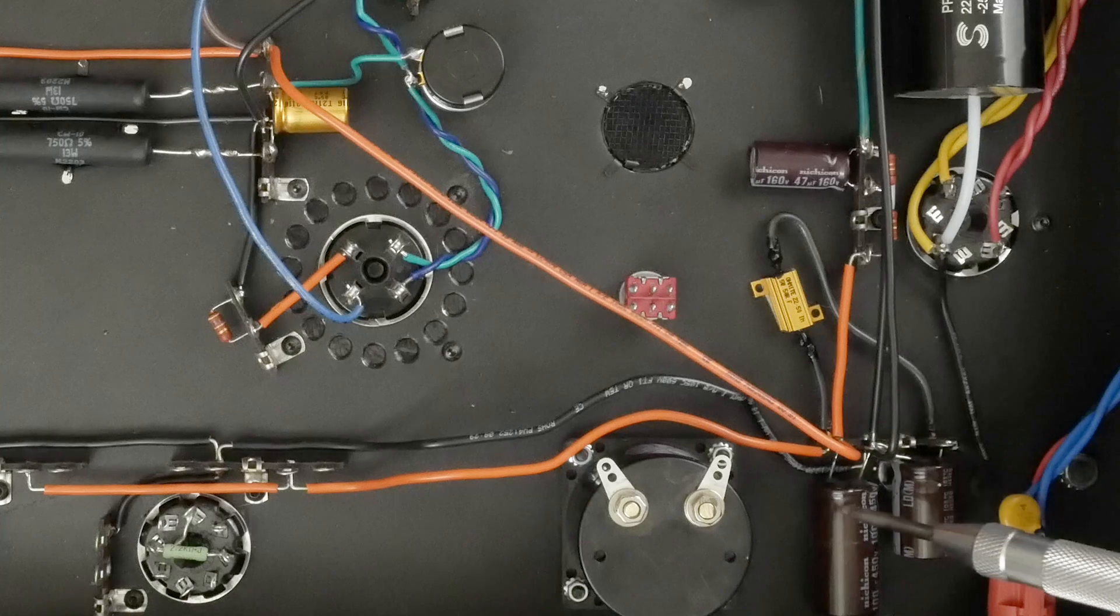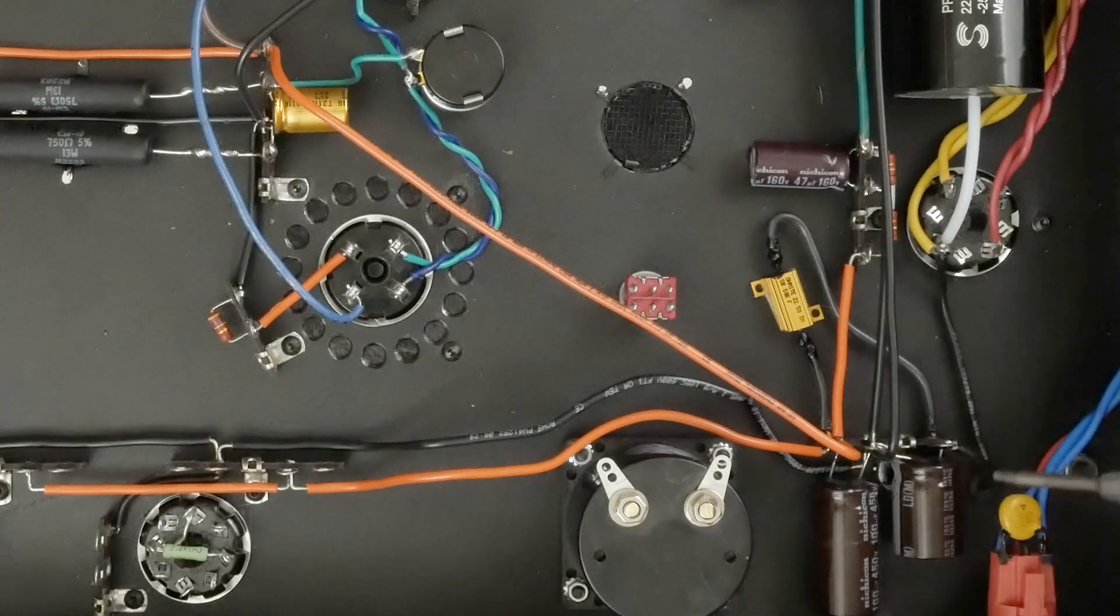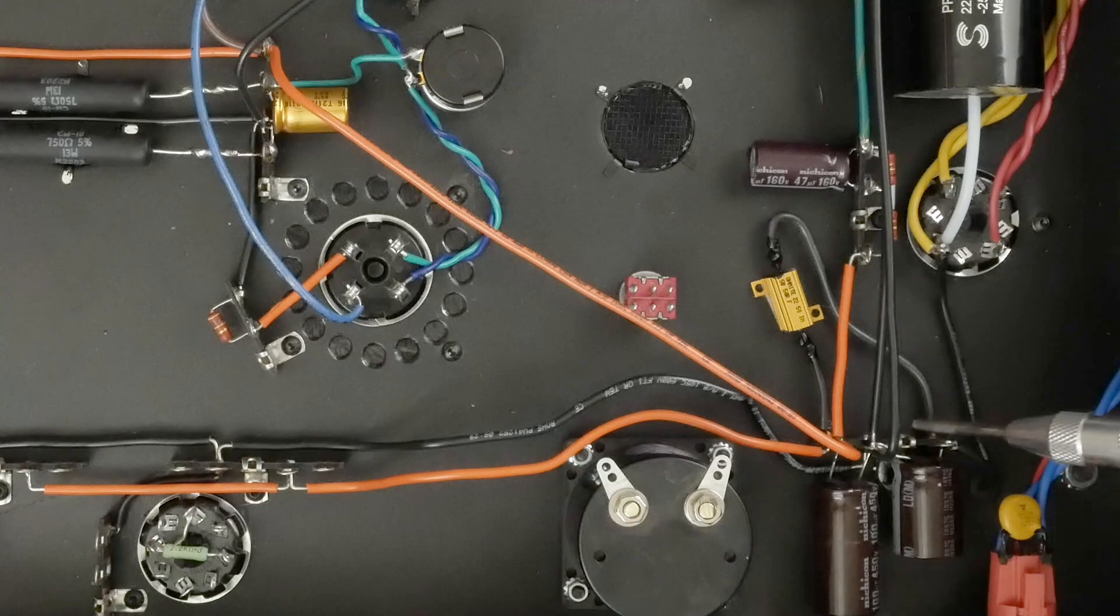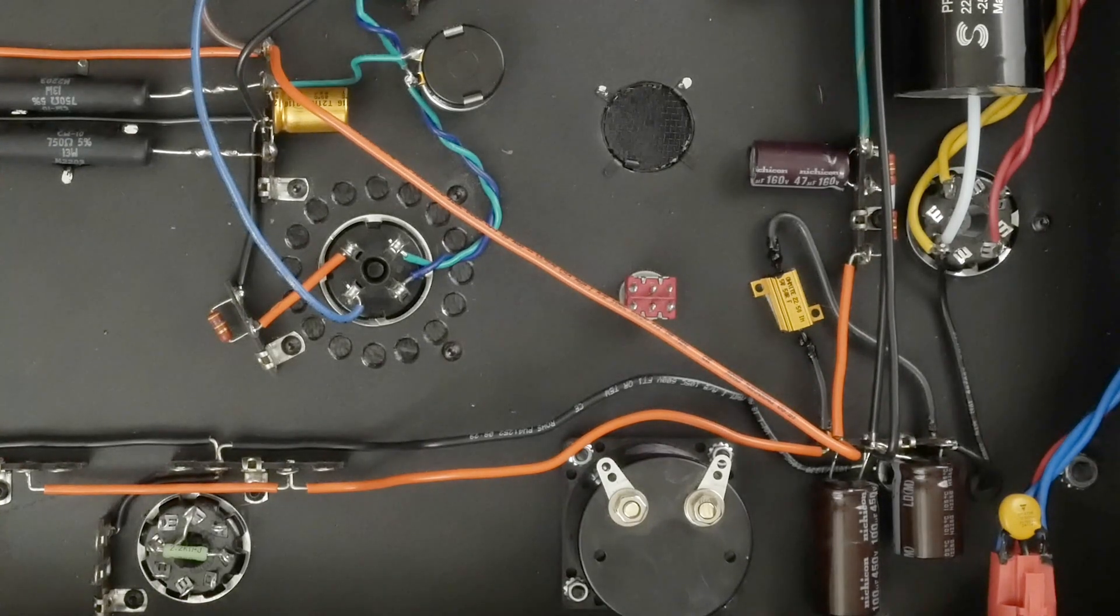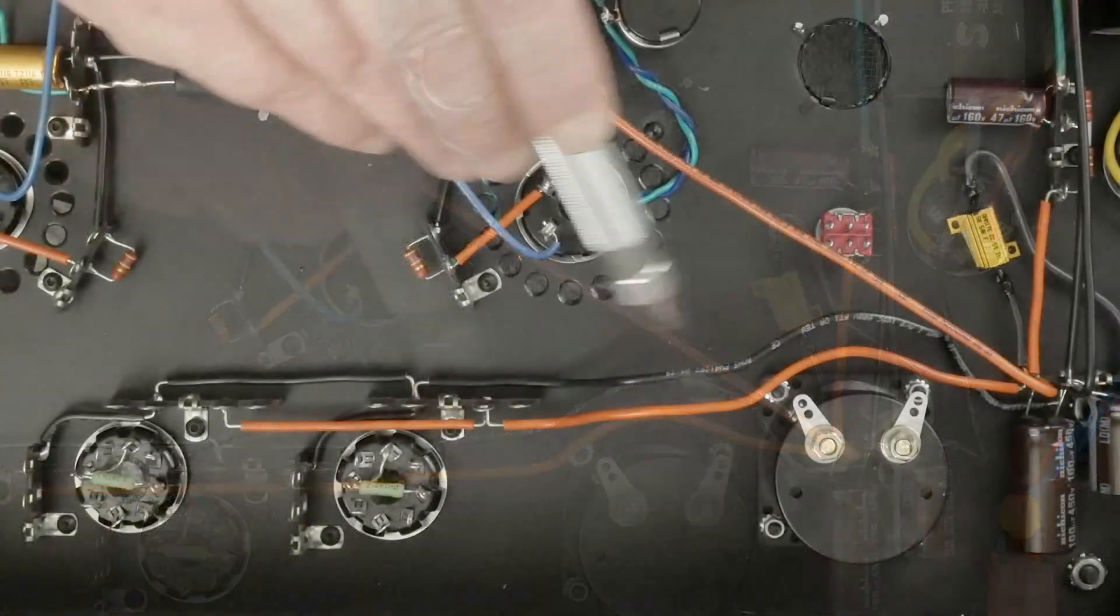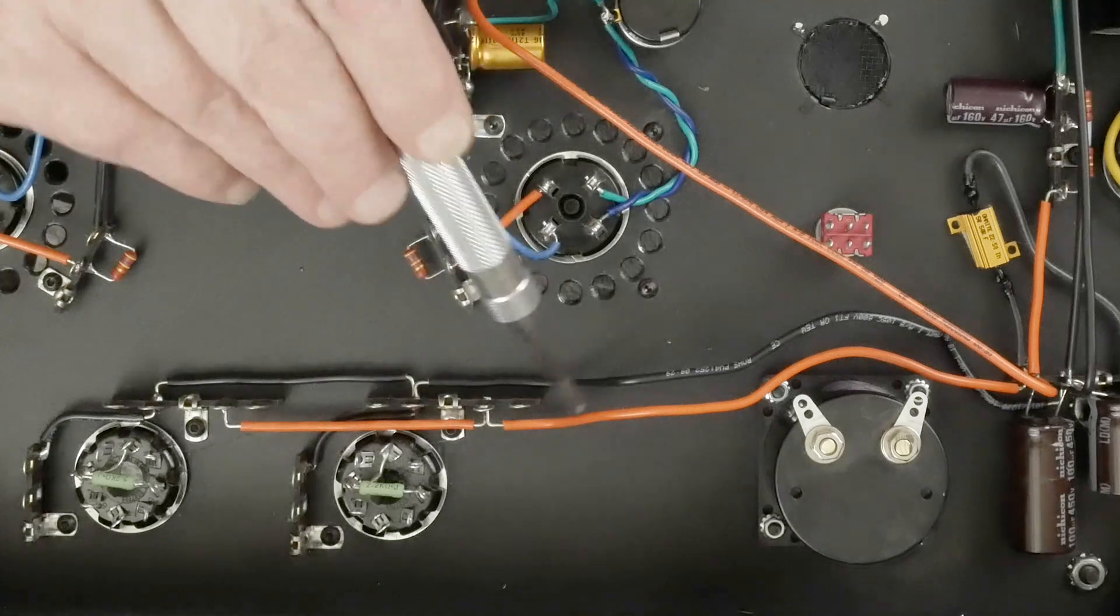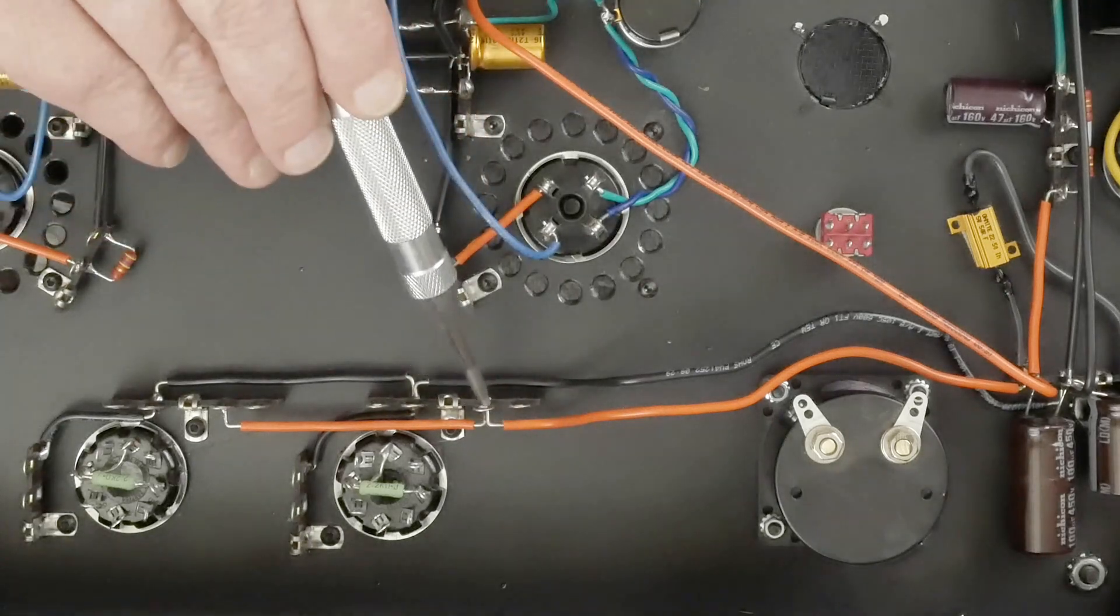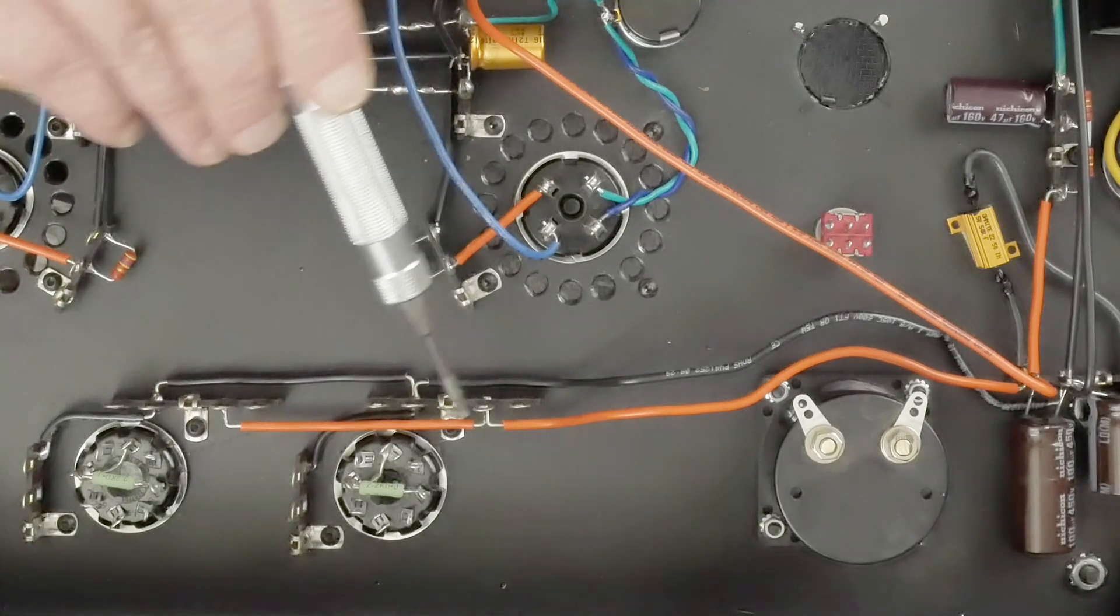Before I soldered all of this stuff together, I wanted to get the wires run over to the front end tube and figure out how I'm going to lay all that out. The B+ runs around the meter, which we've got installed but not wired up. This will be one positive terminal, and then it jumps over to the other positive terminal.